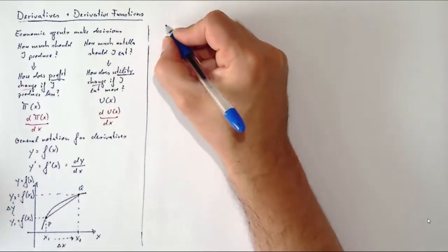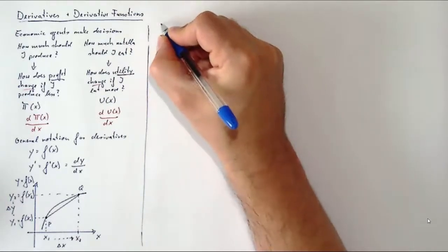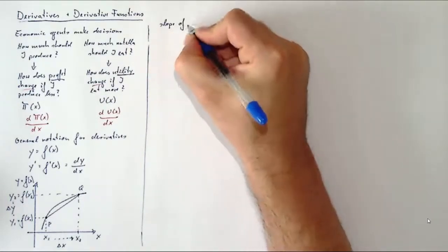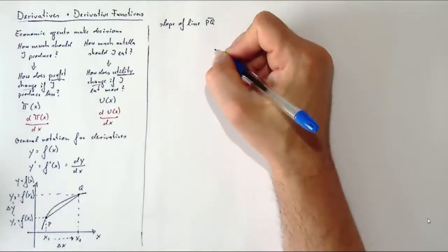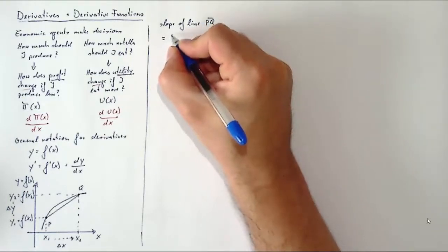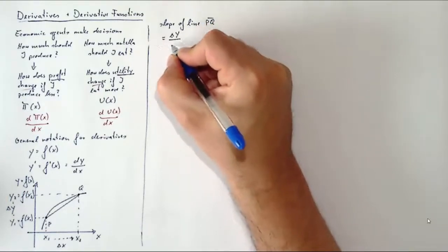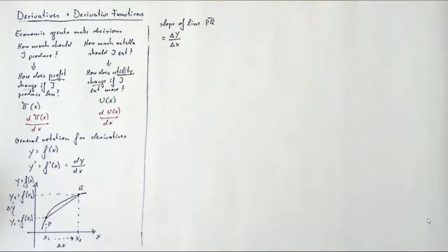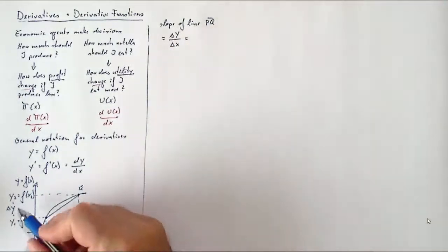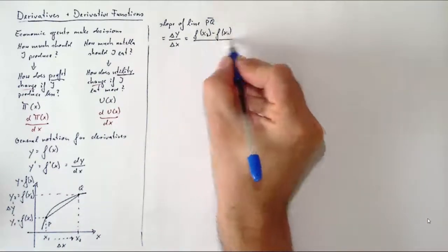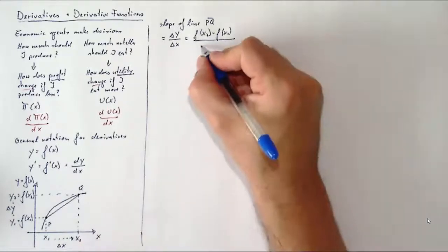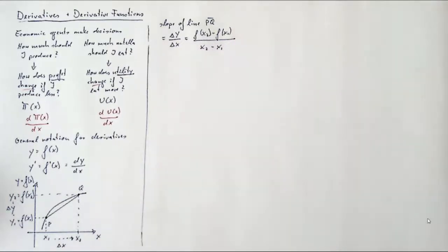That tells us how the value of y changed as we moved from input value x₁ to input value x₂. So it's the slope of the line that connects P and Q that we are interested in. We know how to calculate that because that's just represented by Δy/Δx. Δy is how the y value changed as we changed x from x₁ to x₂, and that's Δx. So Δy is f(x₂) - f(x₁), and Δx is x₂ - x₁.